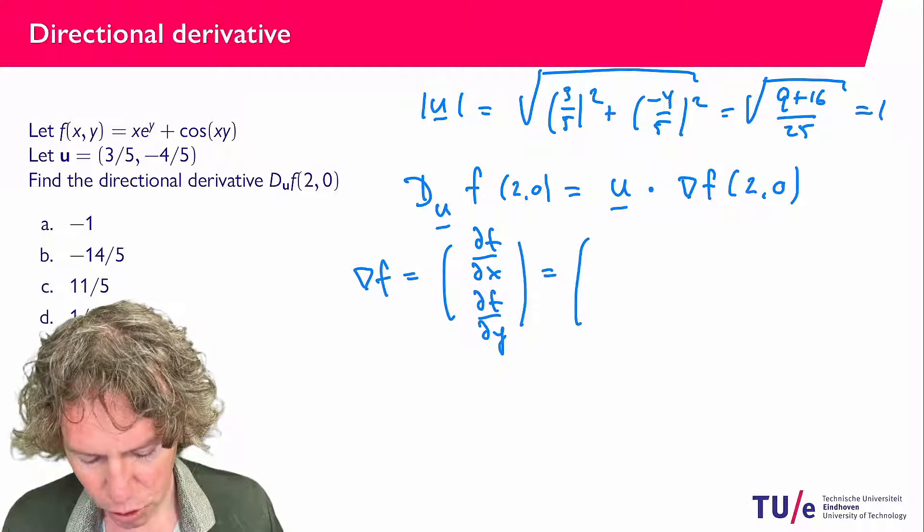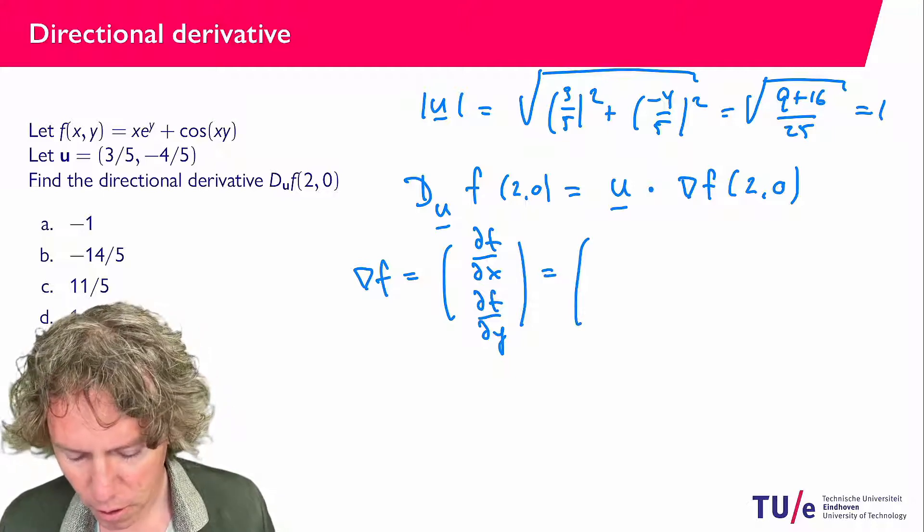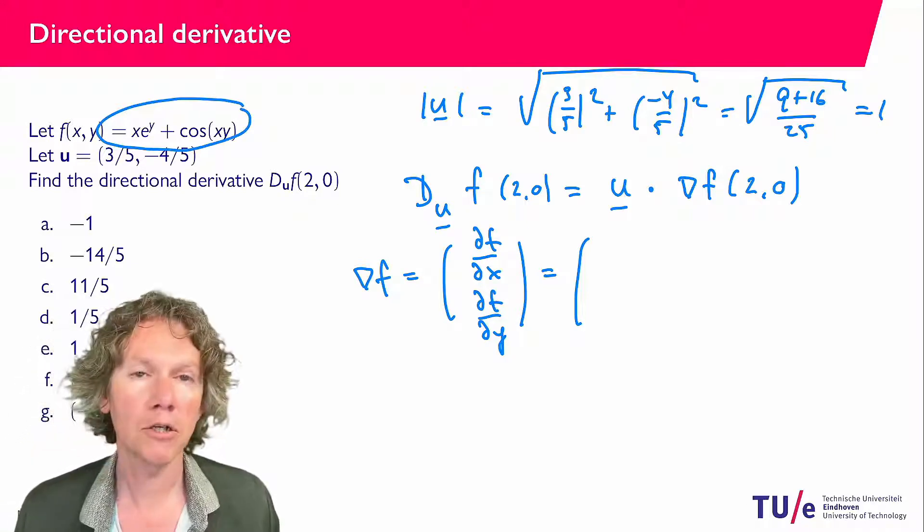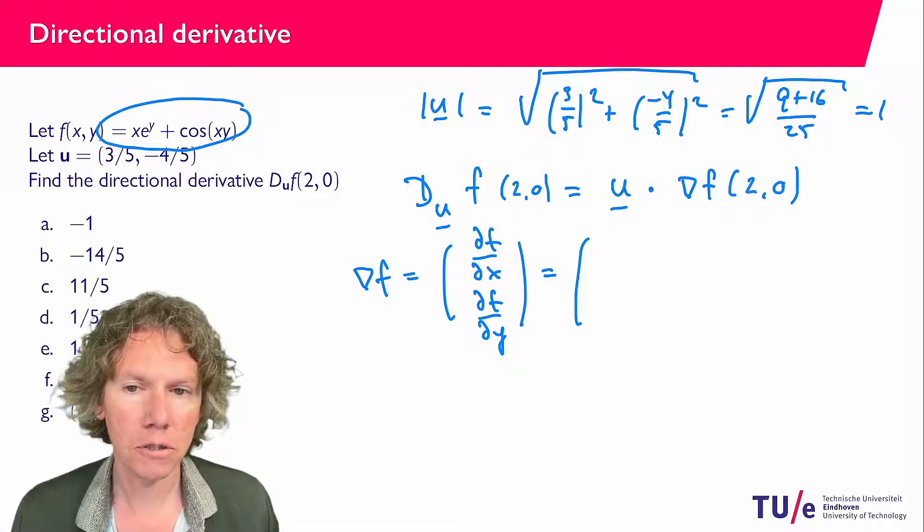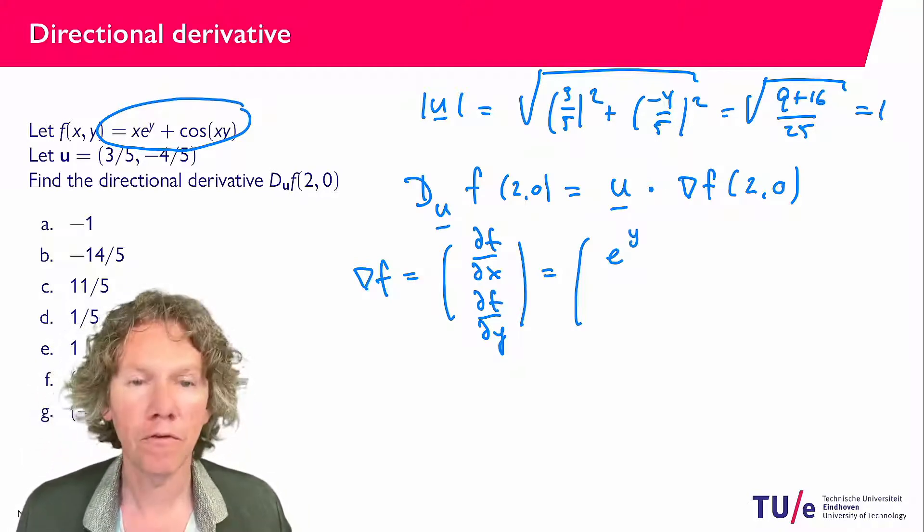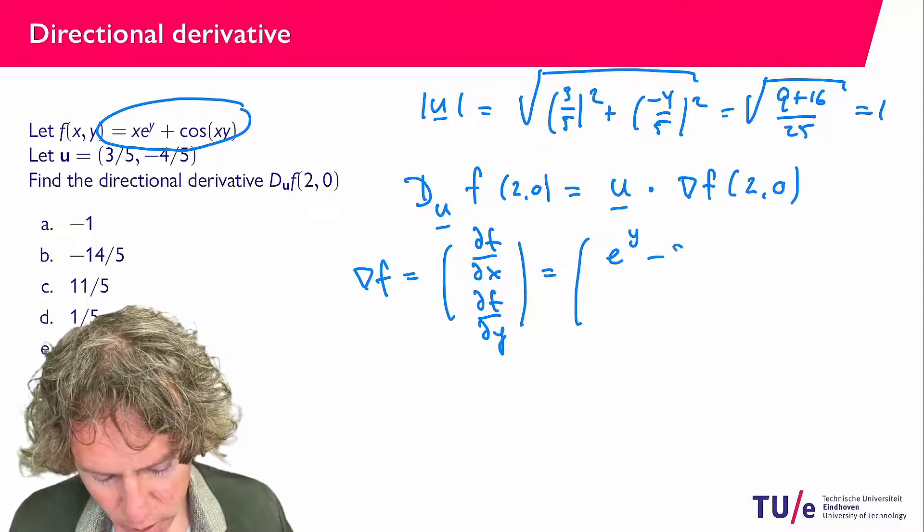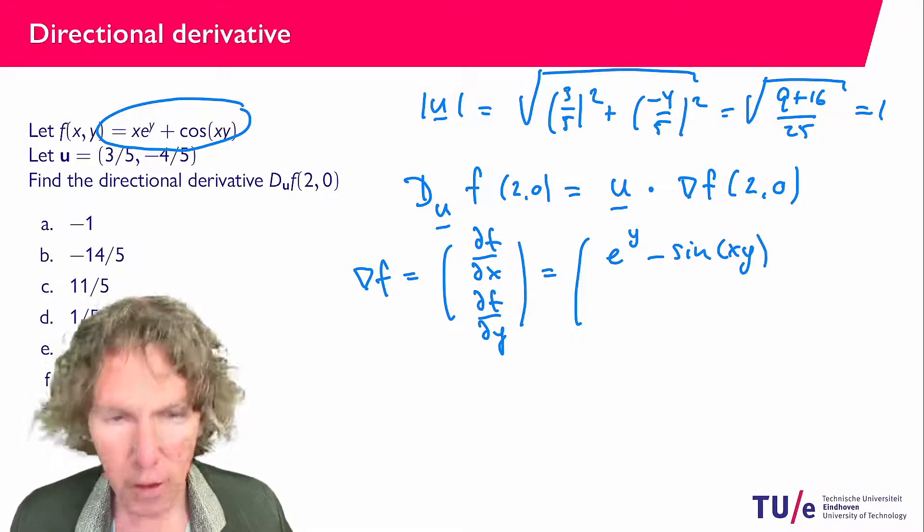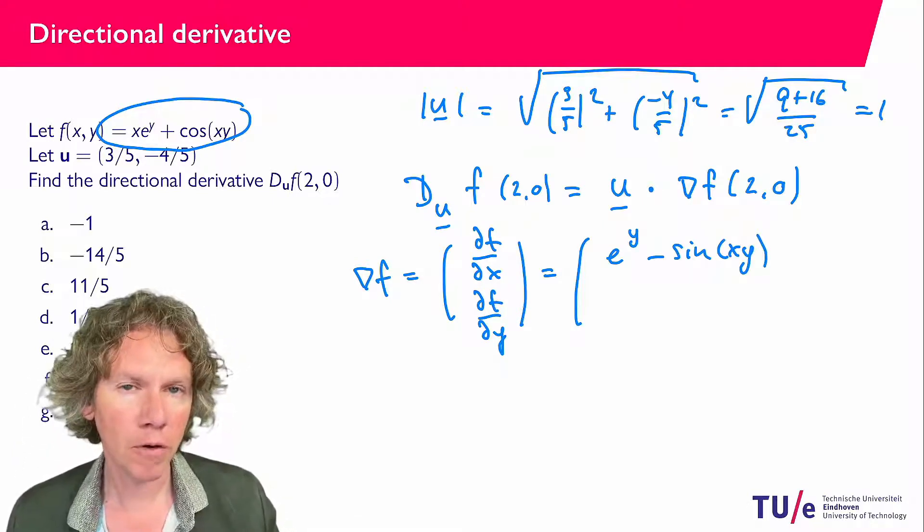I have to differentiate our function here with respect to x now. So treating y as a constant, I find e^y. The derivative of the cosine is minus the sine, and then with the chain rule, x is the variable and y is a constant, so I get times y.